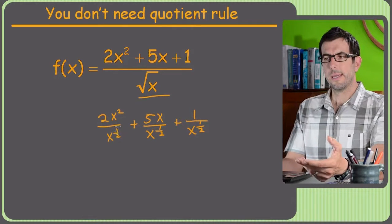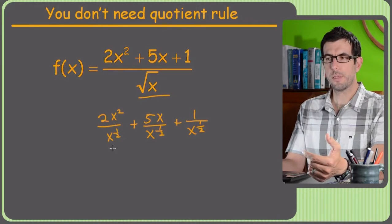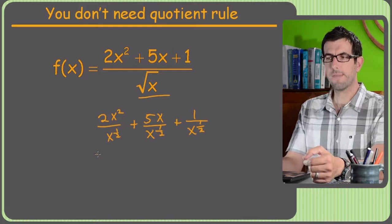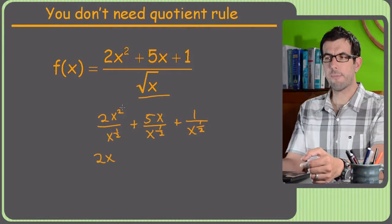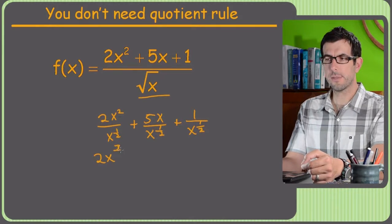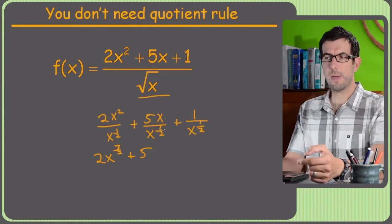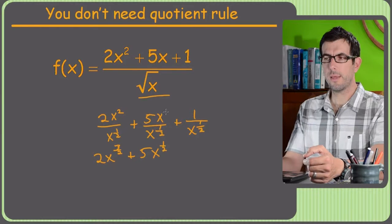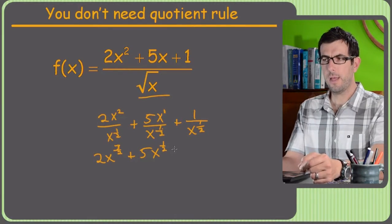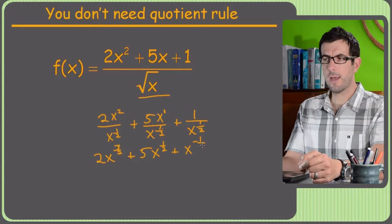Alright, so we subtract exponents. So 2x squared over x to the 1 half is going to leave, you sort of take away a half from that exponent and you get 2x to the 3 halves. And then 5x divided by x to the 1 half is 5x to the 1 half, because just the exponent of 1 minus the 1 half downstairs gives us the 1 half left over. And then that one is just x to the negative 1 half.